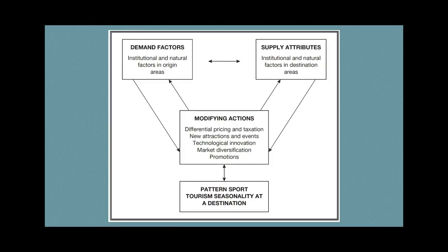Here is a visual model to understand the different ways seasonality could be affected by many factors. The first are demand factors — institutional and natural factors in the origin area, meaning where the tourists are coming from. For example, tourists come to the Philippines in certain months because in their country of origin it's cold or it's a holiday, and they want to spend it somewhere else.